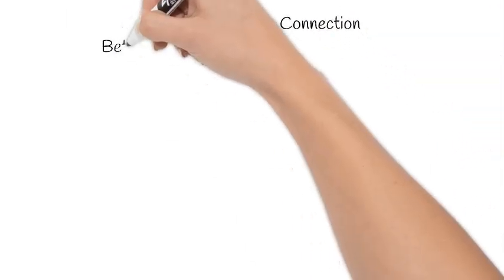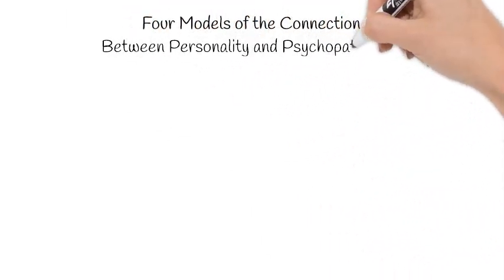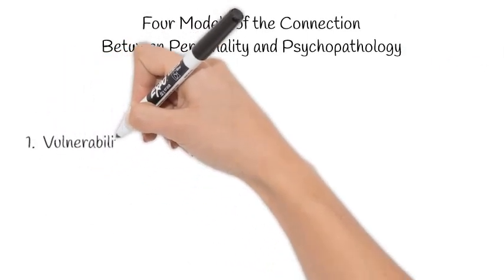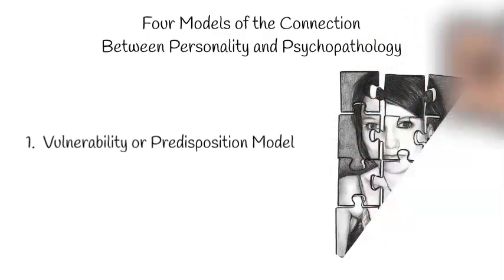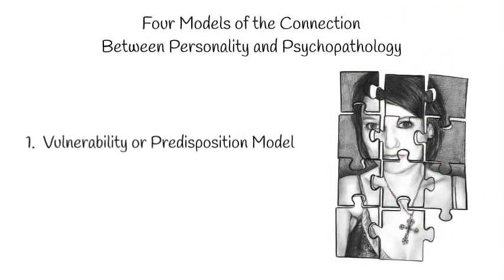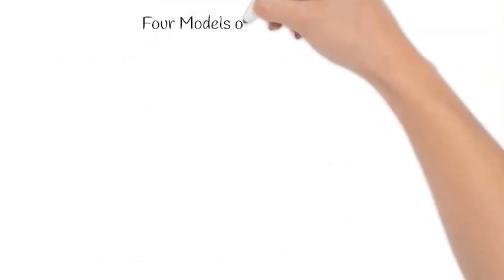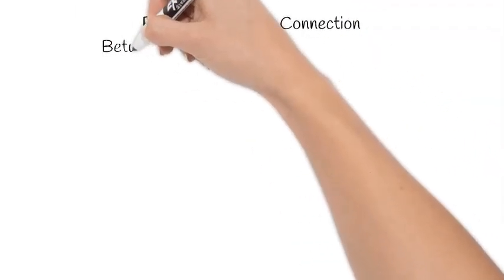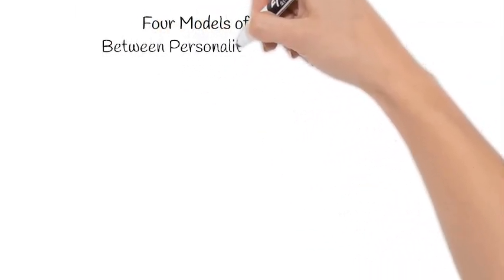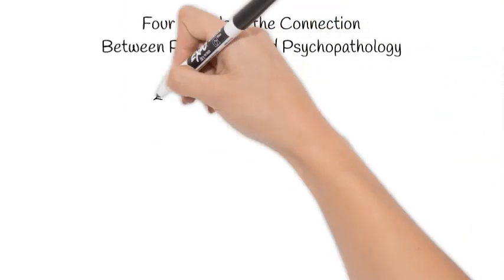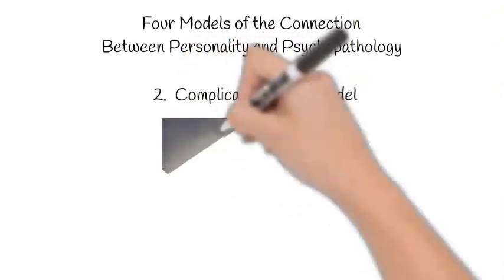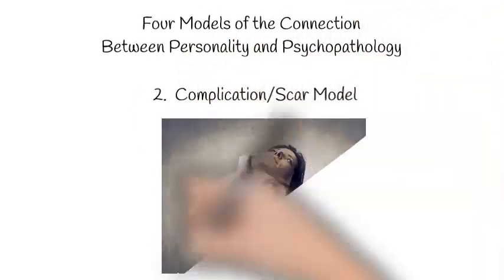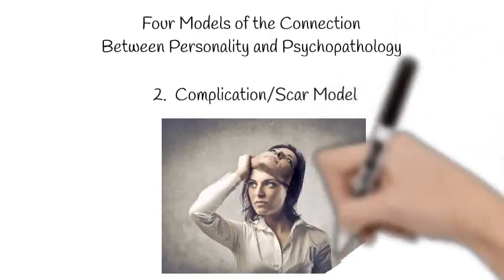It has been suggested that there are four models of the possible connection between personality and psychopathology. The first model is called the vulnerability or predisposition model. This model states that pre-existing personality traits or temperamental styles predispose an individual to developmental illness. The second model is the complication or scar model, which suggests that certain experiences scar a person's personality, changing it in key ways from pre-morbid functioning. For example, a person who was previously high in openness to experience would decrease in openness after a traumatic experience.